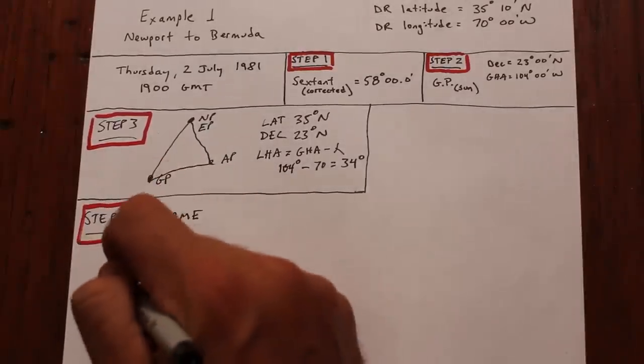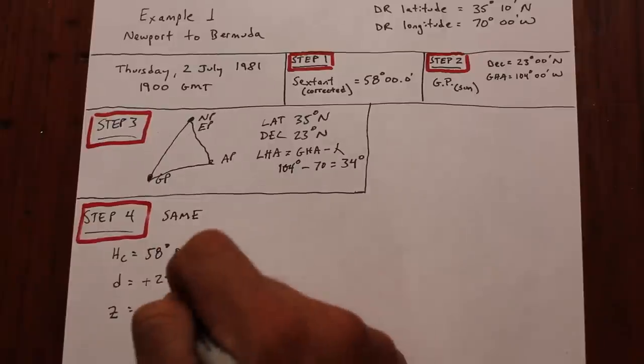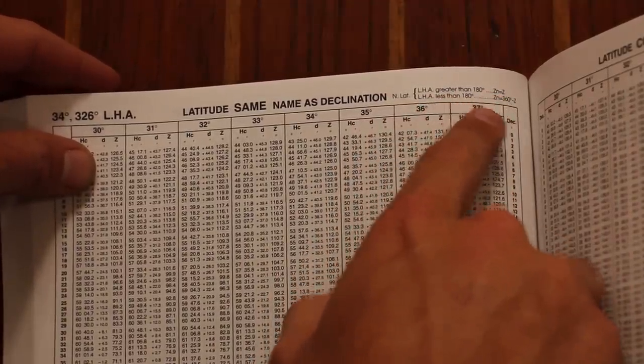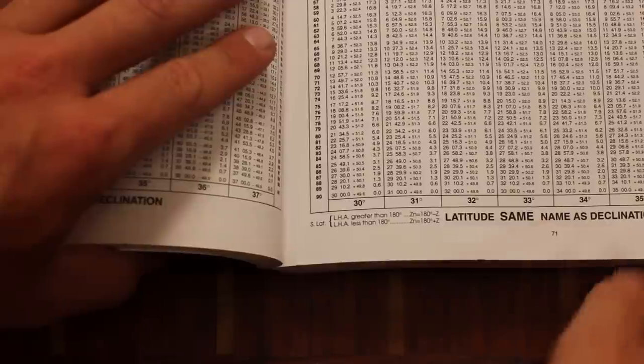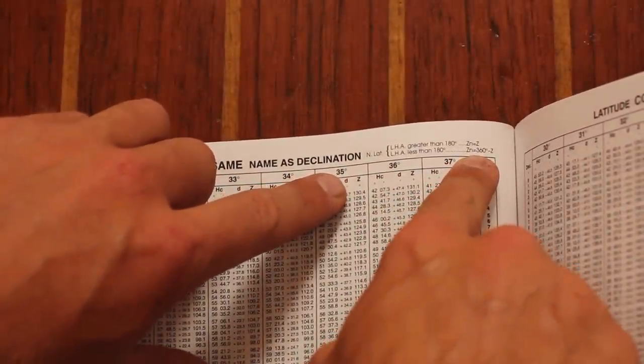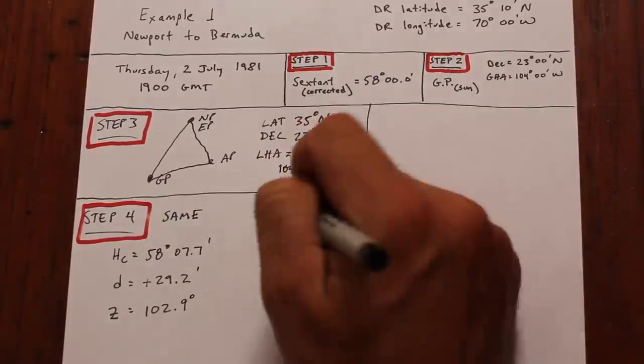HC is the computed height of the object. D is an interpolation figure that we'll use in example two, and Z is the bearing to the object's GP, or the bearing to the zenith distance of our triangle. You'll notice it's kind of odd in this case. We shot in the afternoon, but the bearing is to the east. Since HO229 can solve triangles inside out and backwards, there's a quick rule you must apply. It's located near the binding of each page. In our case, the LHA is less than 180, so Zn is 360 minus Z. That actually makes more sense. So we'll apply that calculation, and we're done with HO229.